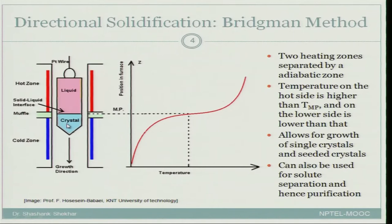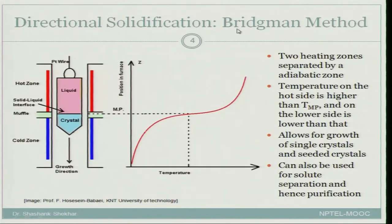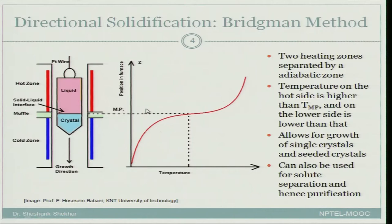Usually what you get like this would be a random crystal and you do not have much say on what particular orientation you get. However, there are some methods called seeded crystal methods where you can obtain crystals of desired orientation. Directional solidification — both Bridgman and the Czochralski method — can also be used for solute separation, also called zone refinement, which is a purification process. So there are two purposes: one, to grow single crystals, and two, to achieve zone refinement or purification.